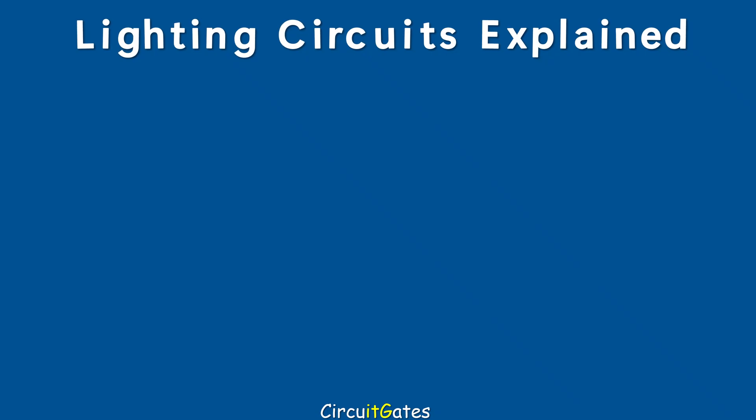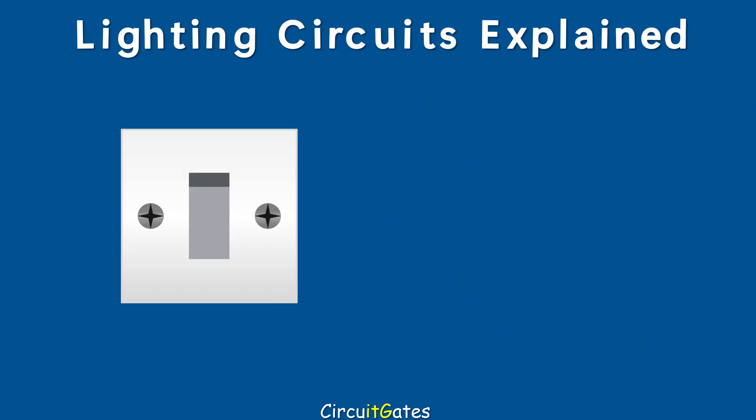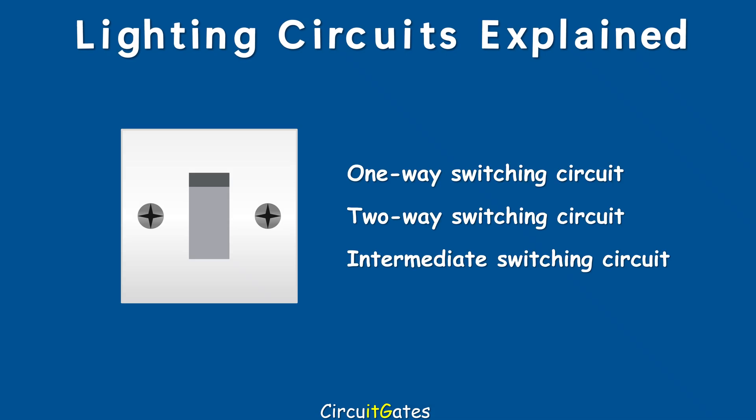Hi guys, in this video I want to look at three types of switching circuits commonly found in electrical lighting: a one-way switching circuit, a two-way switching circuit, and lastly an intermediate switching circuit. Let us start with the one-way switching circuit.